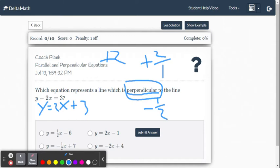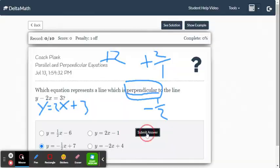So now we know our slope is going to be negative 1 half. They happen to give us all the equations in slope-intercept form, so we can see here's our negative 1 half slope, and we submit our answer.